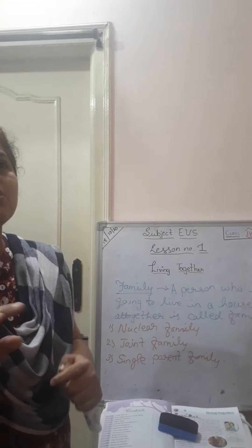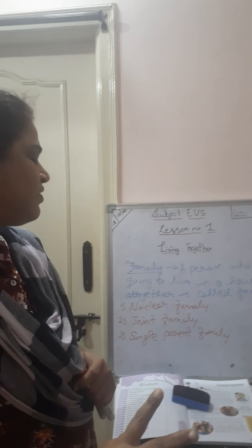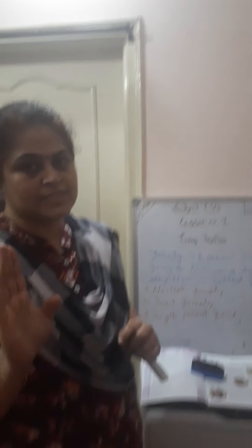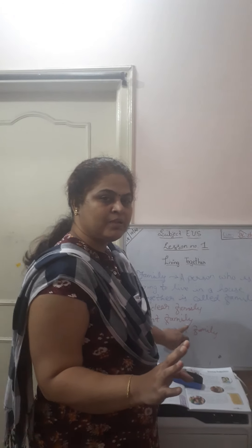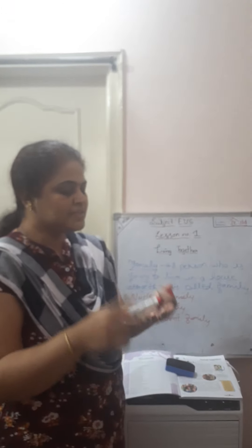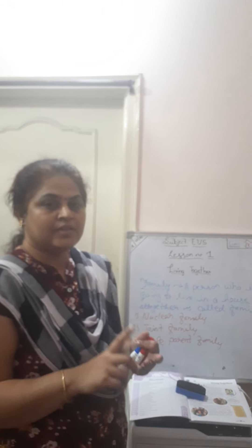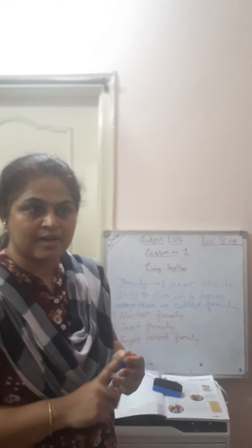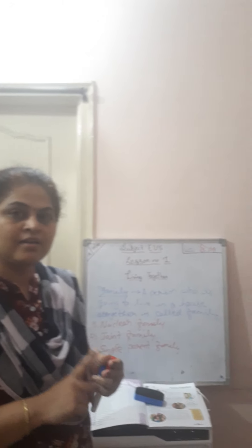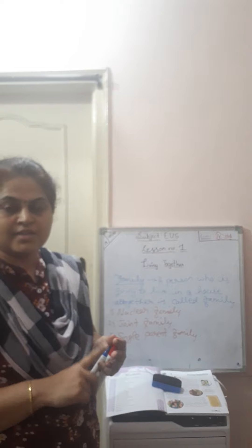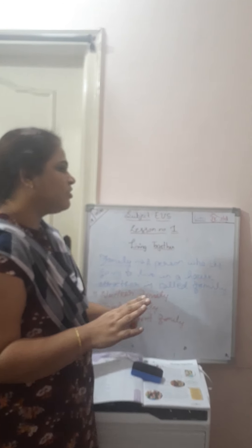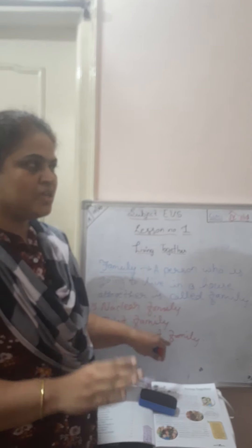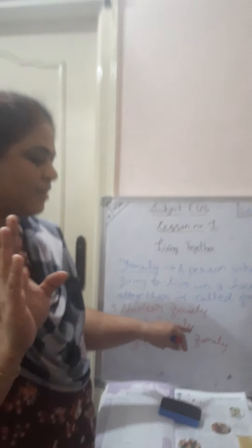One or two persons, they are going to live in a family. Then what is joint family? Joint family means grandparents — grandfather, grandmother, siblings, uncle, aunt, parents, cousins — everyone. Those are going to live together in a home. That is called a joint family.